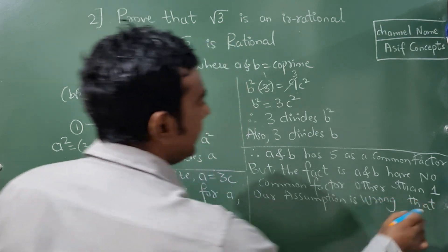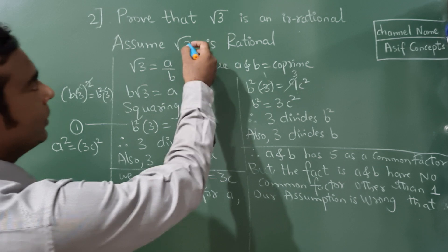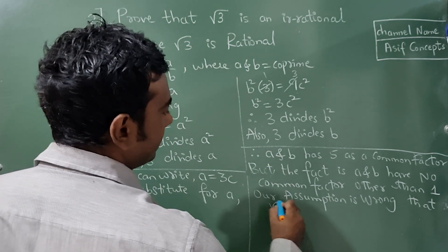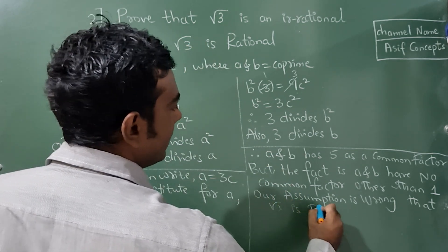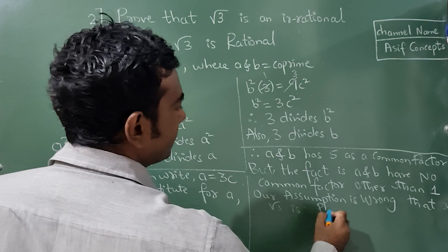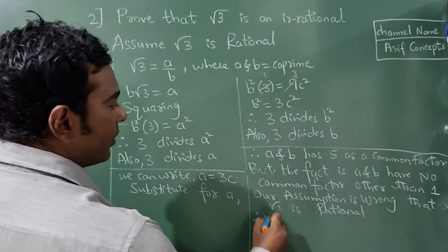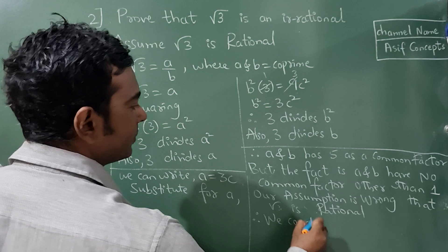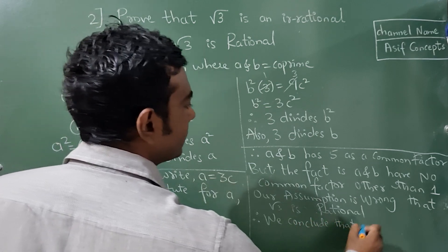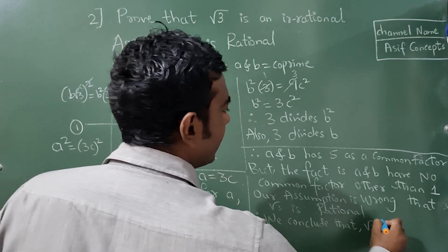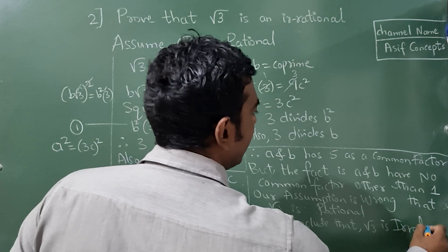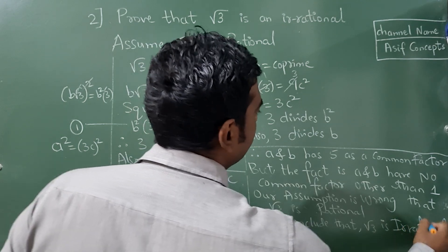Or you can write incorrect, that root 3 is rational. Therefore, we conclude that root 3 is an irrational number.